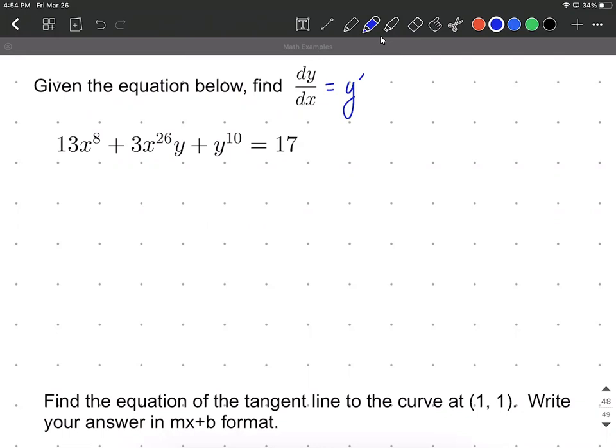All right, so we want to use implicit differentiation as we go through this to find our derivative with respect to x. So on the first term there, we have 13x to the eighth power. We're going to use the power rule in this case. So the 8 comes down, multiplied by the 13 gives us 104x to the seventh power as we reduce the exponent by 1.